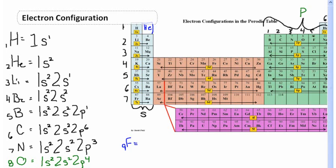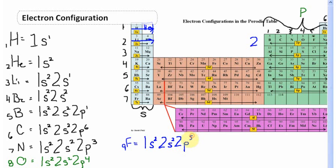Next up is fluorine, which has nine total electrons. On the first energy level, two electrons fill the s orbital — 1s2. On the second energy level, two more fill the s orbital — 2s2. That leaves five electrons for the p orbital: 2p5. The electron configuration of fluorine, which has nine protons and electrons, is 1s2 2s2 2p5.